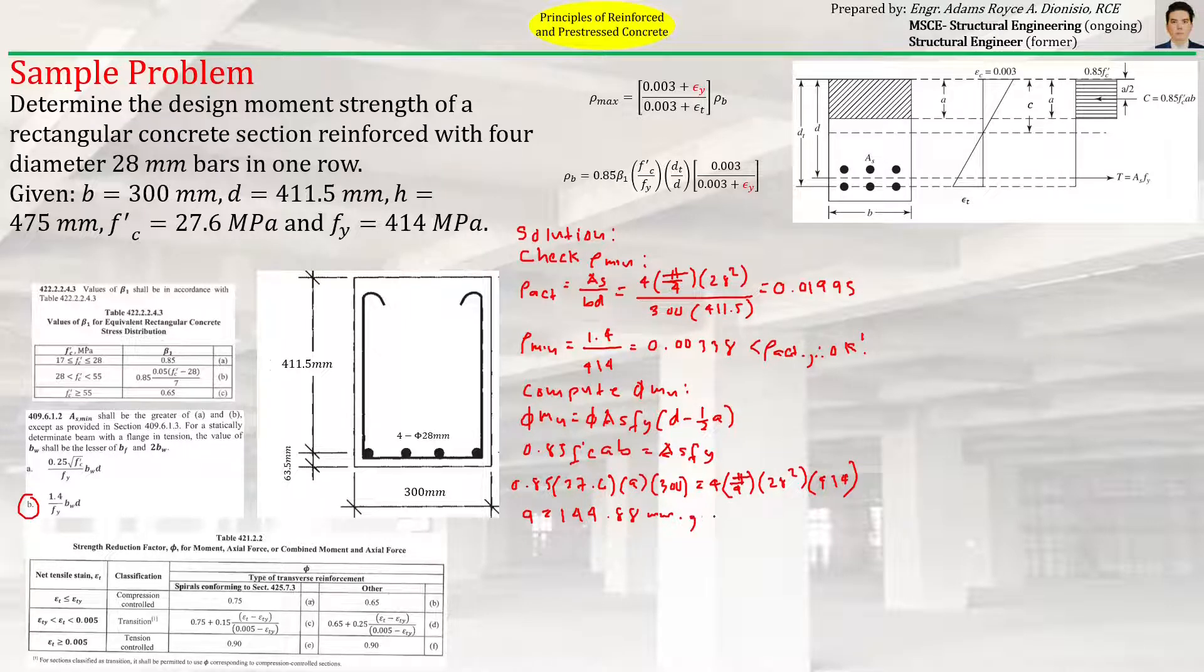With that a, we can now compute for c, which is equal to a over β₁, where β₁ is 0.85 because we fall within this range. That equals 144.88 divided by 0.85, which is 170.45 mm.